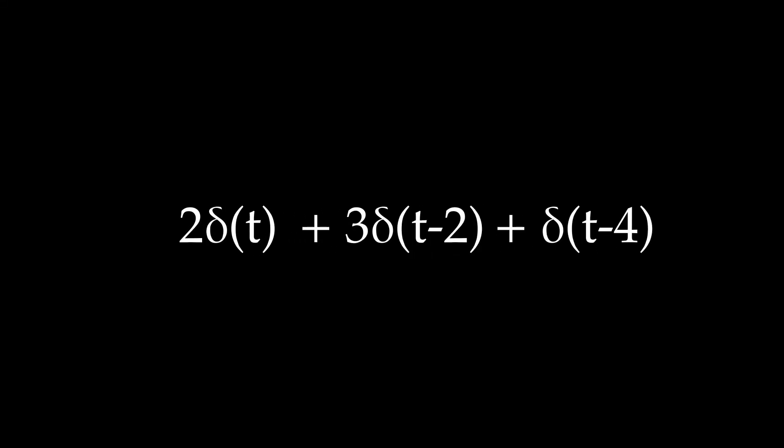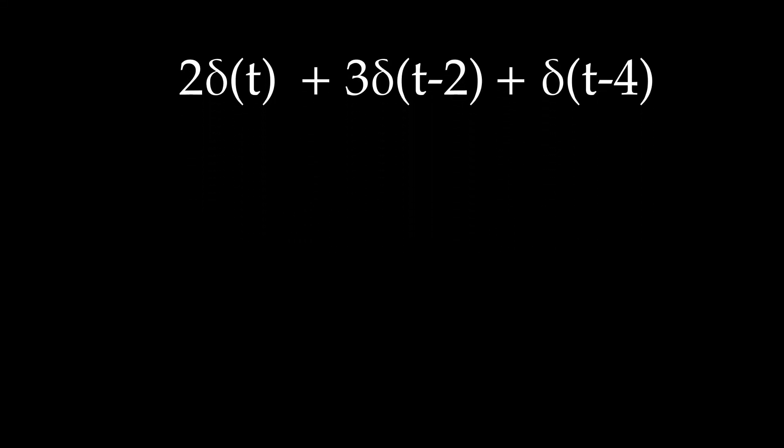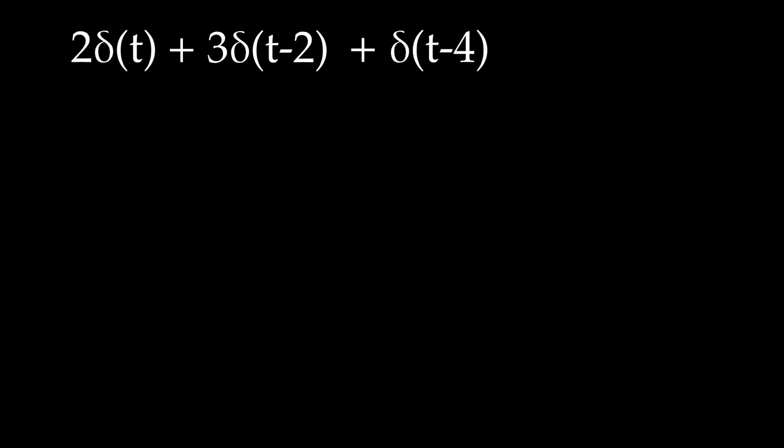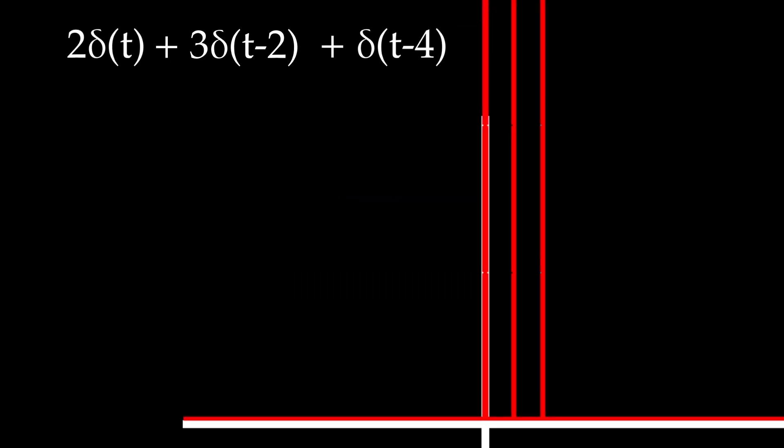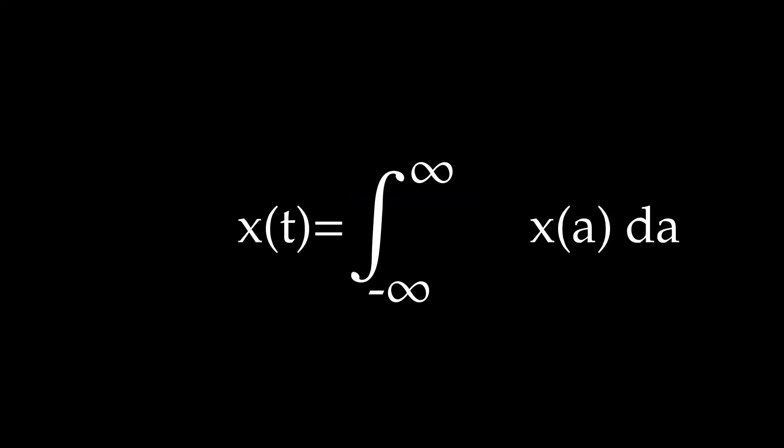This means that we didn't just solve for the output for a delta function, but for any sum of scaled and time shifted delta functions. And since our input x of t can be broken up into delta functions, that means that all you have to do is replace the delta with the v we found.